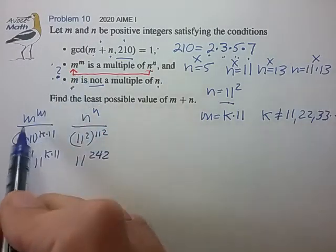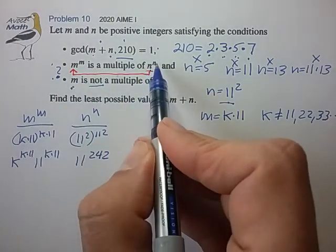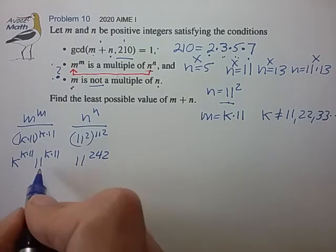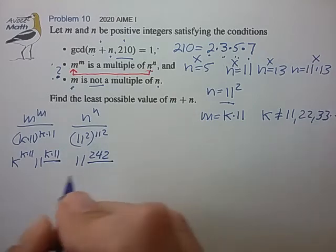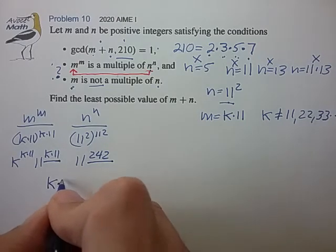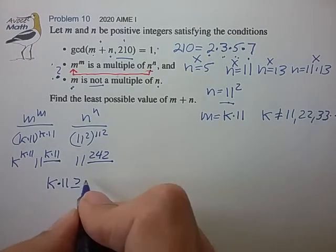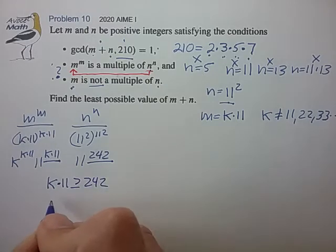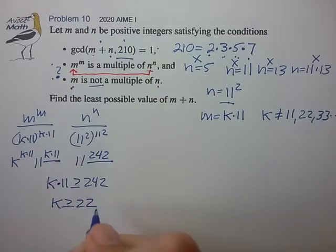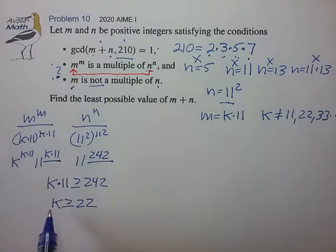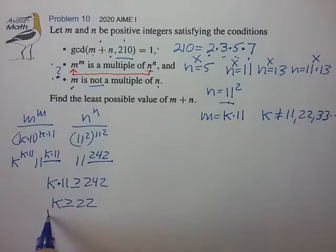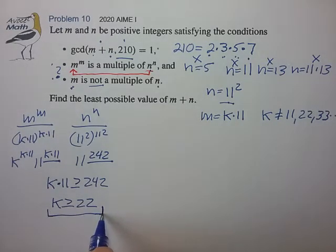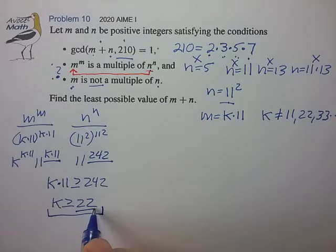So for the first condition, we want m to the m to be a multiple of n to the n, so we find that this exponent has to be at least as large as this exponent, k times 11 greater than or equal to 242, such that k is greater than or equal to 22. All right, so that's a very useful condition now. So since we're again trying to find the smallest values of m plus n, let's try to pick a few values of k that are as small as possible. So let's start off with k equal to 22.